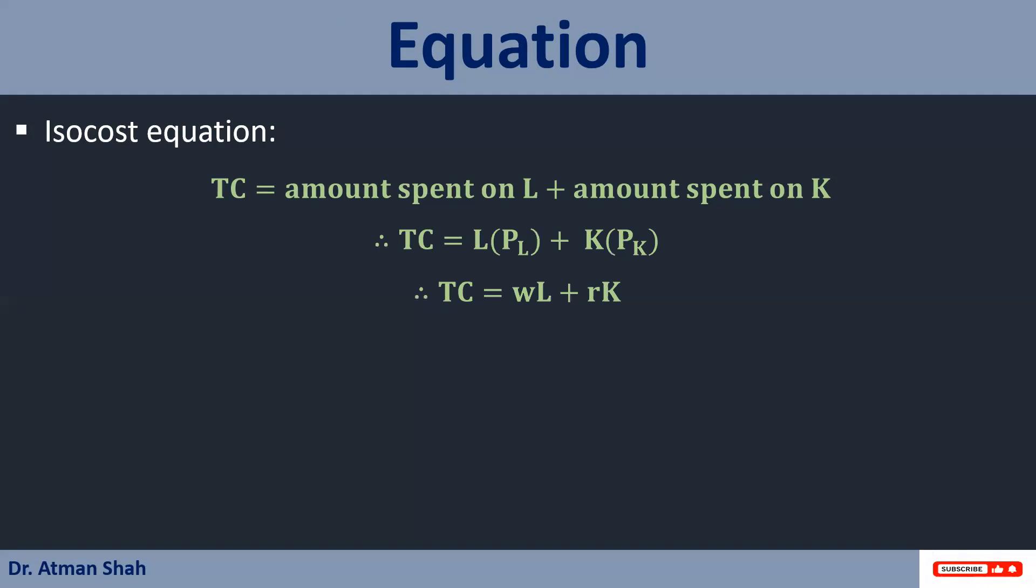So here WL is the amount spent on capital, that is rate of interest into capital units. So RK is equal to TC minus WL, and if we divide the equation by R then we have K is equal to TC upon R minus W upon R into L. So here this minus W upon R, which is nothing but the factor price ratio, is known as the slope of the isocost line. So minus W upon R which is equal to minus PL upon minus PK. That minus sign shows that isocost is downward sloping.